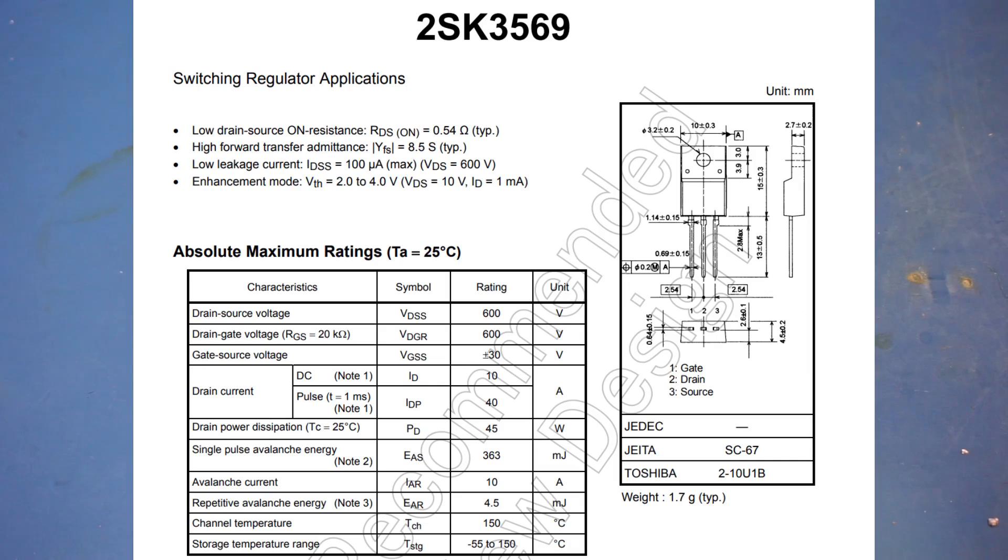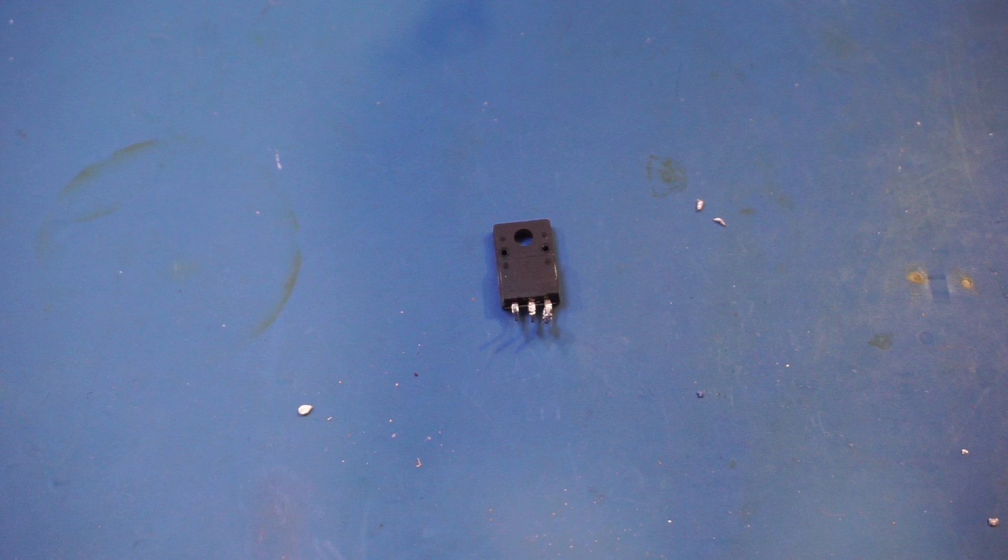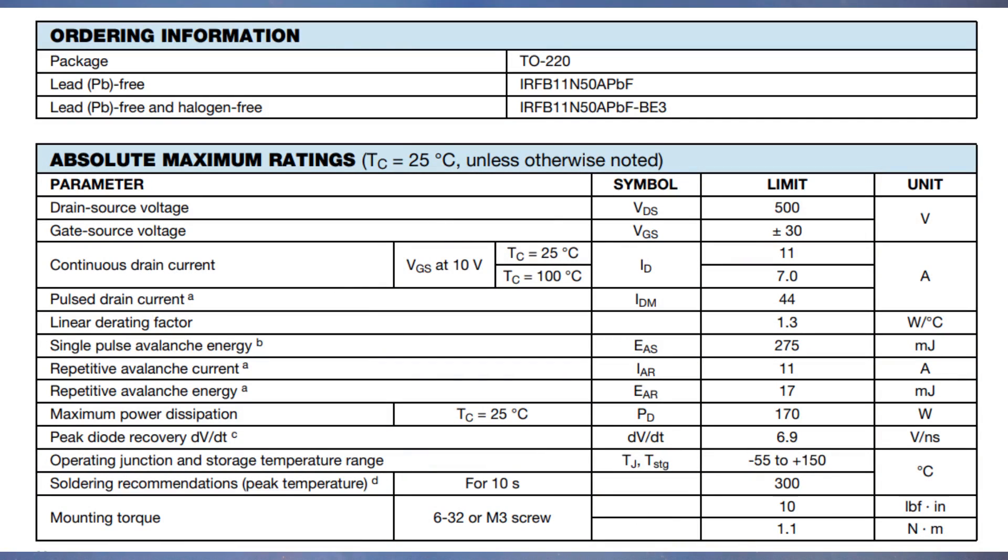They are rated for 600V and 10A. So the closest alternative I have in the lab is the IRFB11N50, and these are rated for 500V and 11A. The maximum voltage is slightly less, but it should be just fine for this application, as the operating voltage is well within 500V.